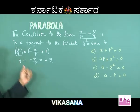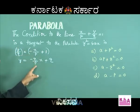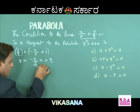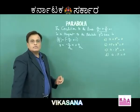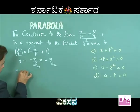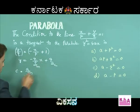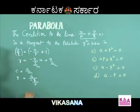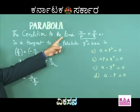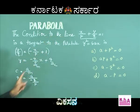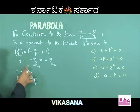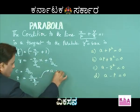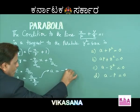Now the given line is exactly in the form of y = mx + c. Comparing, c = q and m = -q/p. The condition for tangency is c = a/m, so c = q and a/m = a/(-q/p).